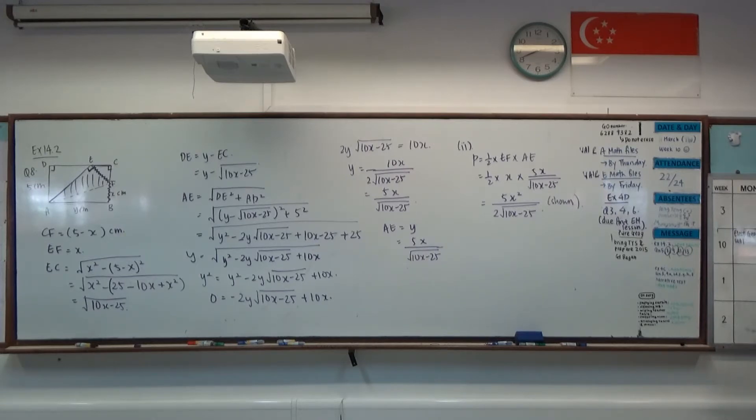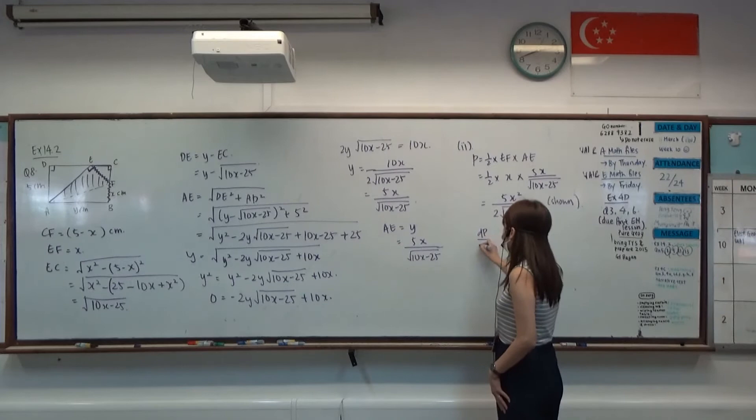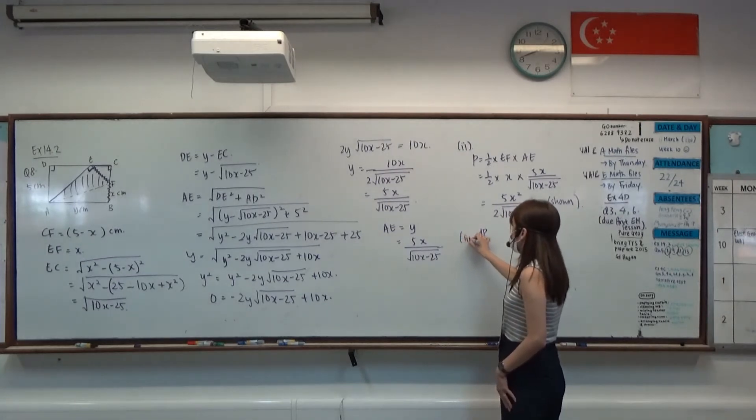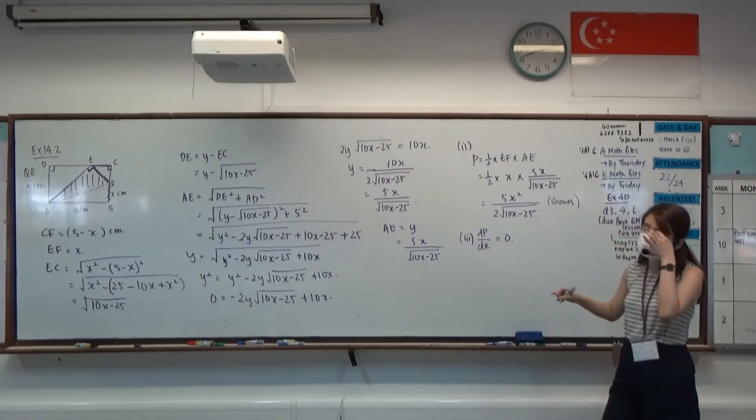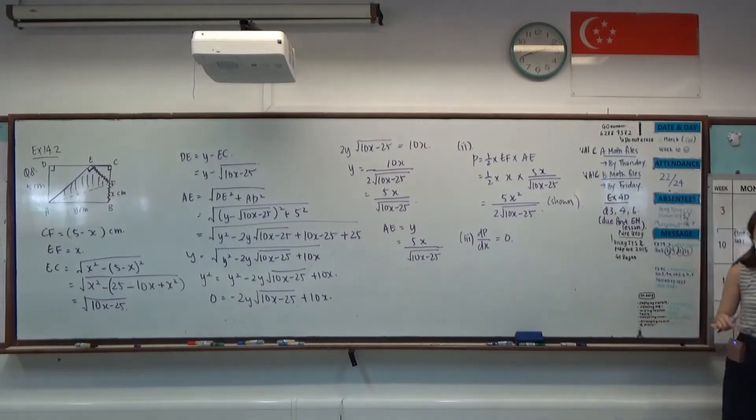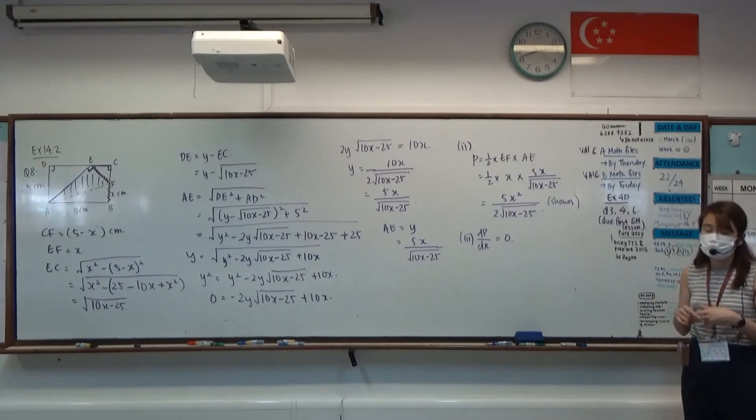Part 3 is to find the value of X for which P is a minimum. So we have to do dP over dX, let it be equals to 0, so that we can find the stationary value - the X that will give the stationary value. Then after that, we need to do second derivative test or first derivative test to actually determine whether it's a minimum for P or not.